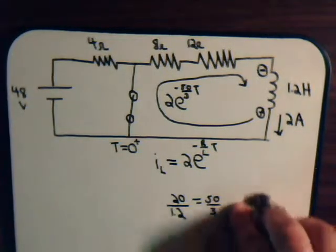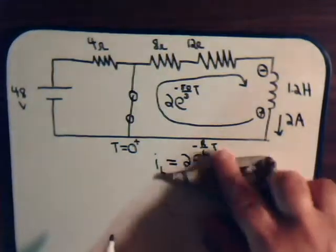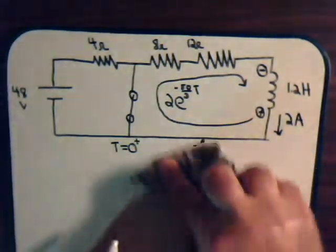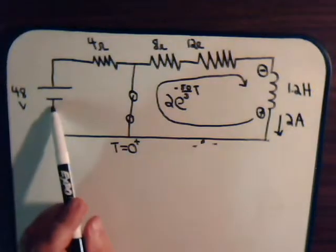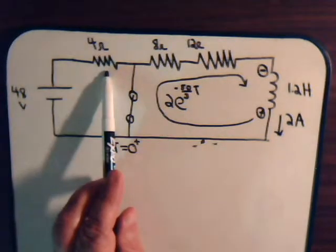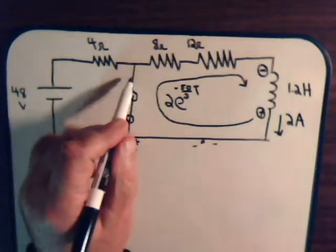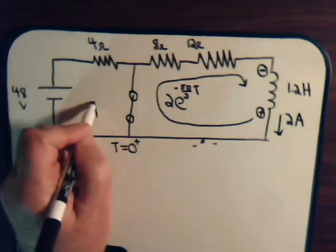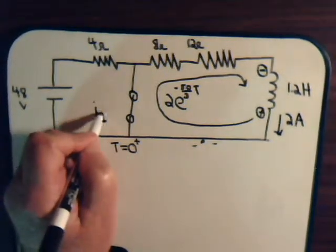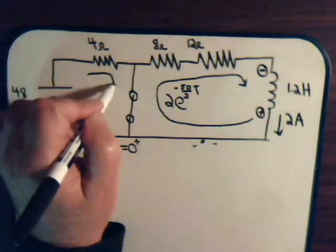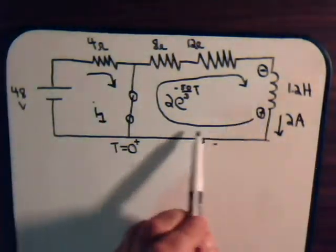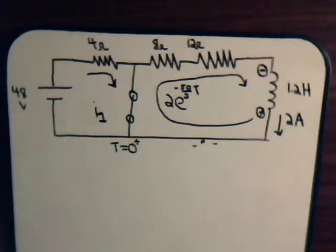So that's our decay current. Now what about over here? This looks pretty simple. This would just be 48 divided by 4, that's 12. And we wanted to know what is the current in this conductor. We'll call that I1. So well, there's 12 amps going into here, then there's a decay current going in the opposite direction.